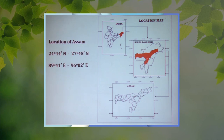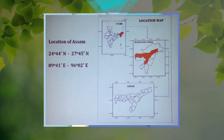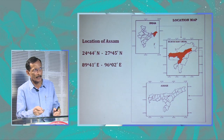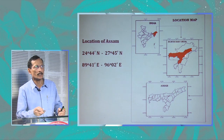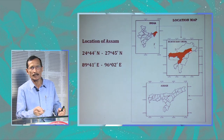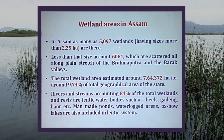Here is the location of Assam state, which is the only plains state in the midst of the hilly states of North East India — surrounded by the mountains of Bhutan, Arunachal Pradesh, Nagaland, Manipur, Tripura, Mizoram, and Meghalaya. Water from all these states passes through the Brahmaputra river and the Assam valley, resulting in the formation of many rivers and wetlands in this state. In Assam, as many as 5,097 wetlands larger than 2.25 hectares, and 6,081 smaller ones, are scattered across the plains of the Brahmaputra and Barak valley.